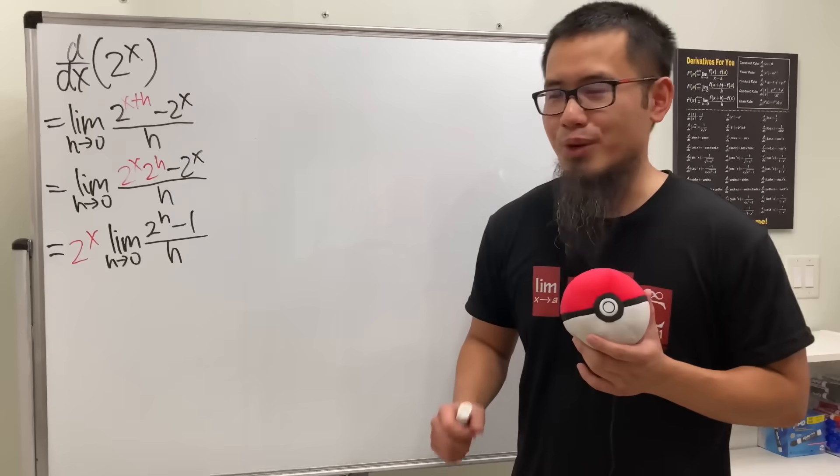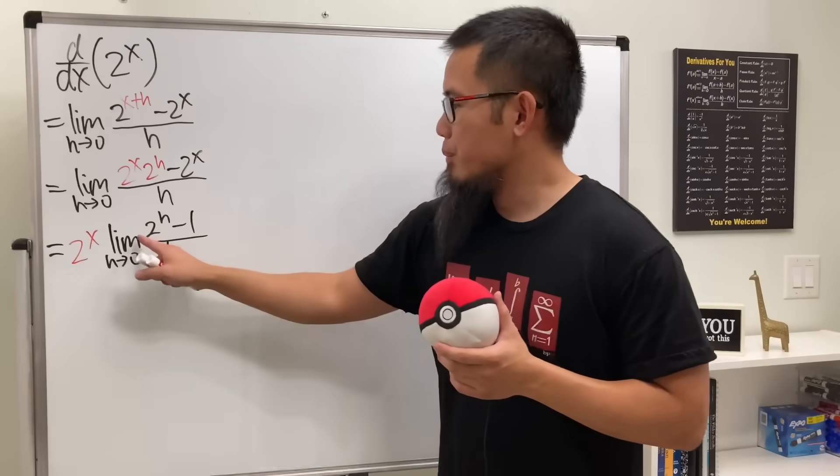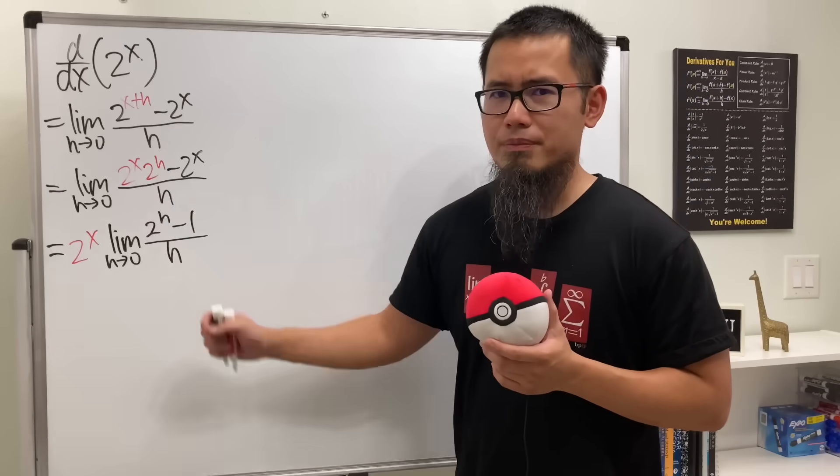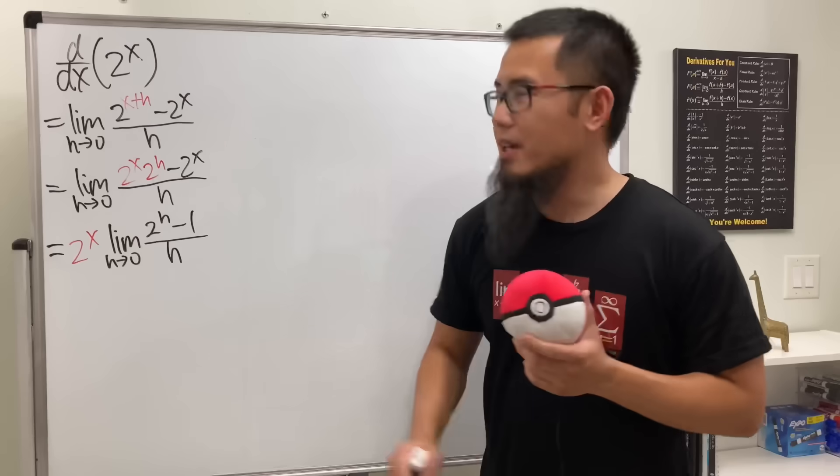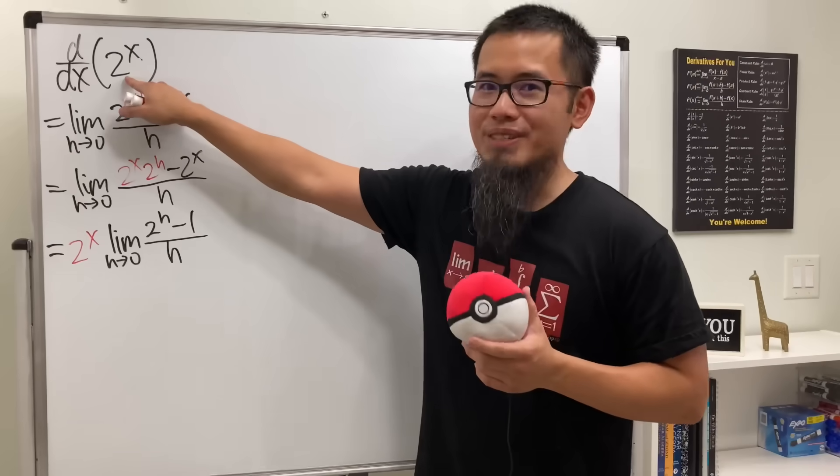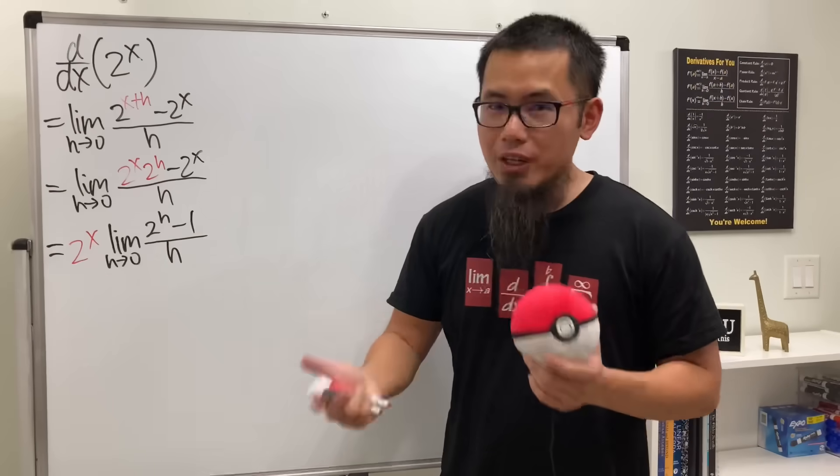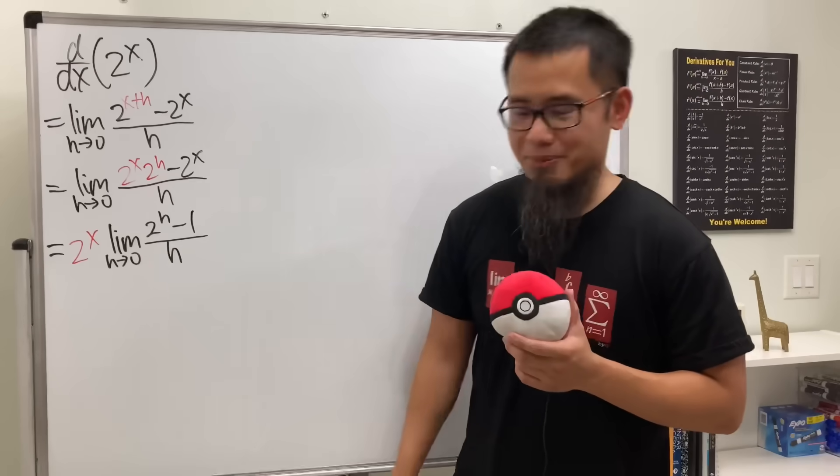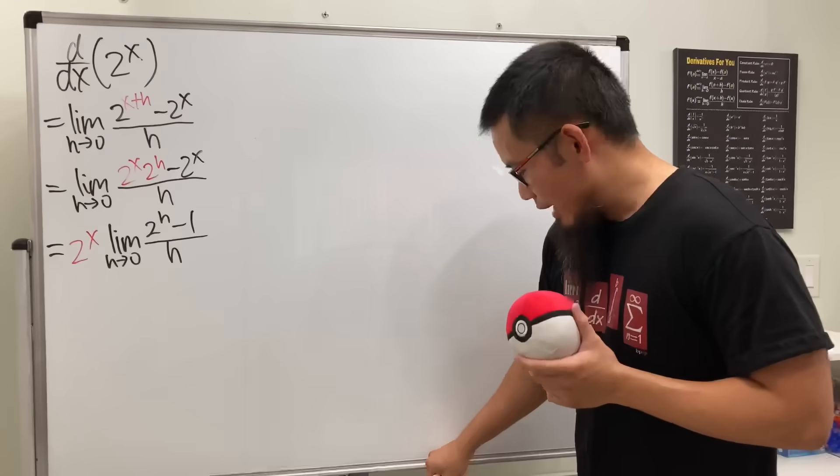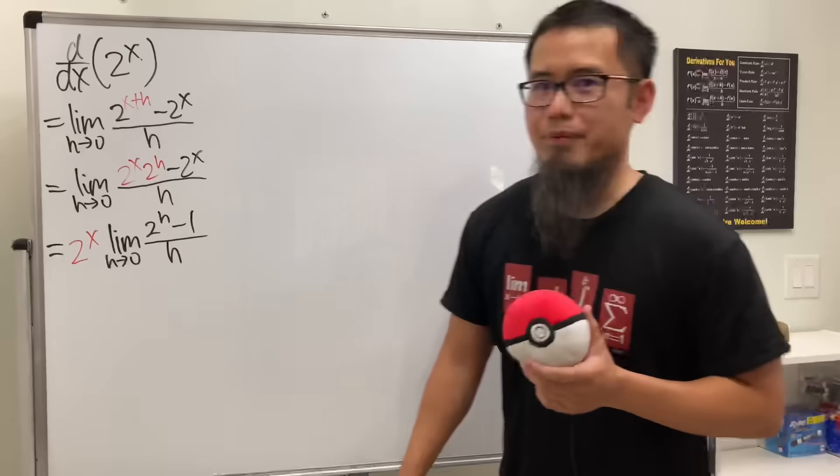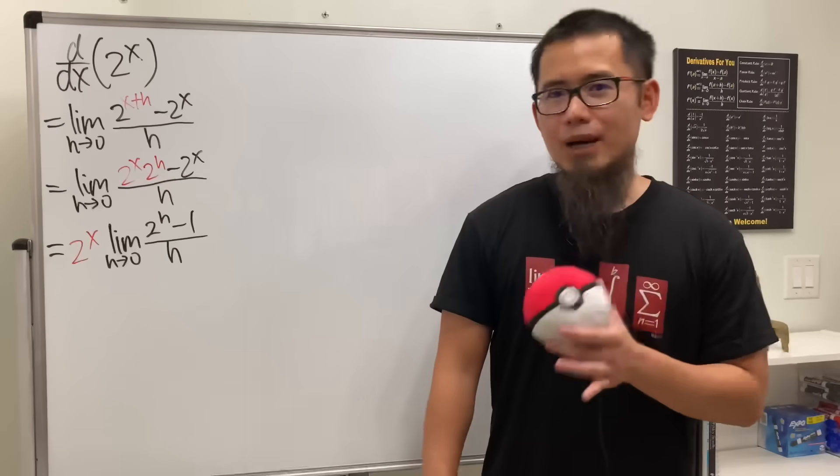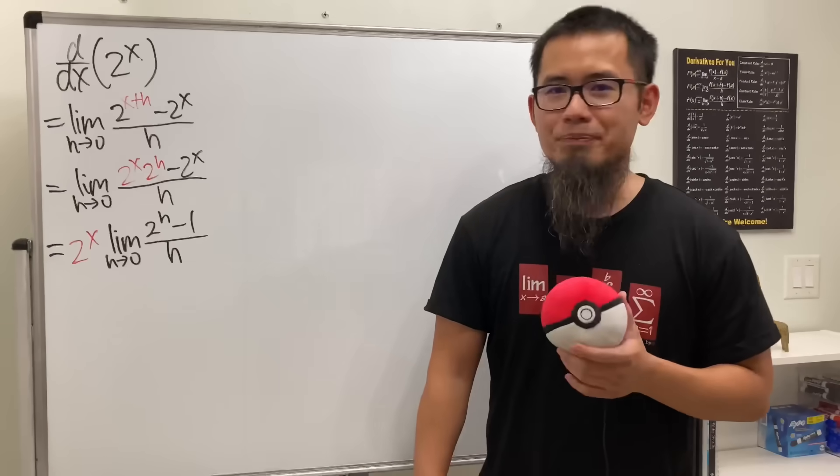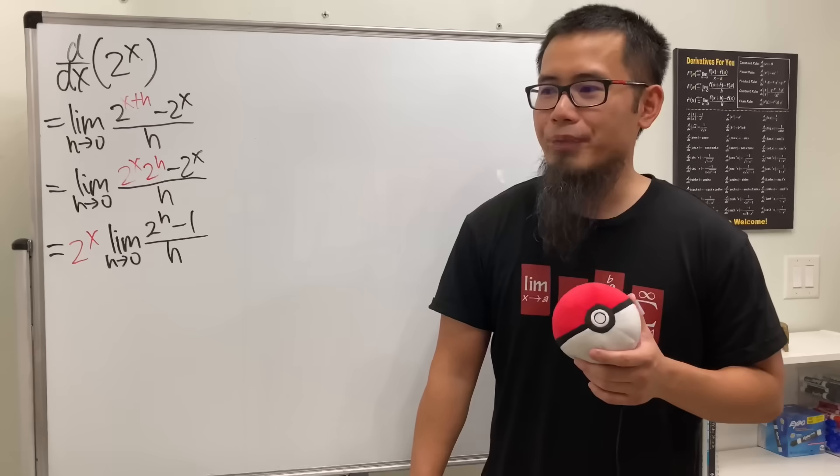So let's go ahead and do L'Hopital's rule. Let's go ahead and differentiate this with respect to h. No, we cannot do that either. Because we are trying to differentiate 2 to the x. We cannot just change the variable and all of a sudden we know how to differentiate 2 to the h. We cannot do that. So how can we figure this out then?